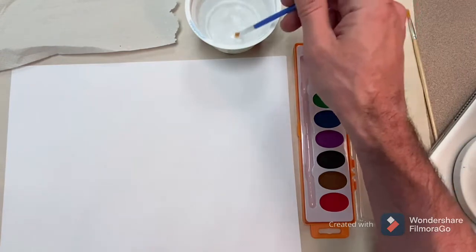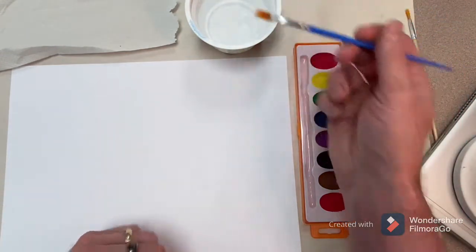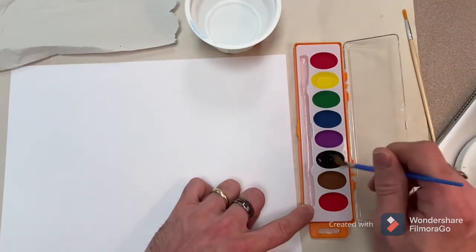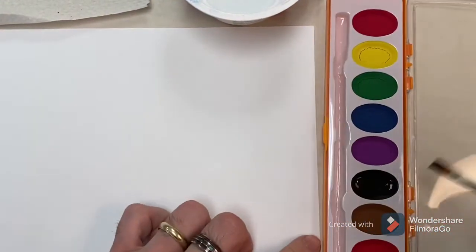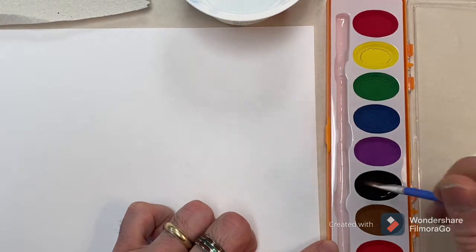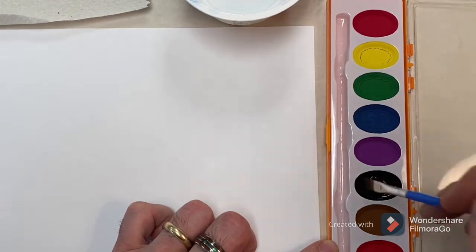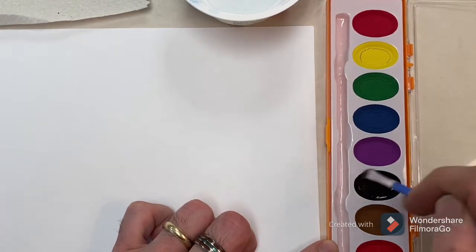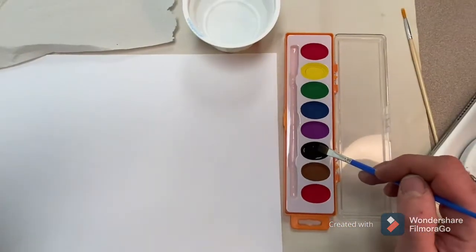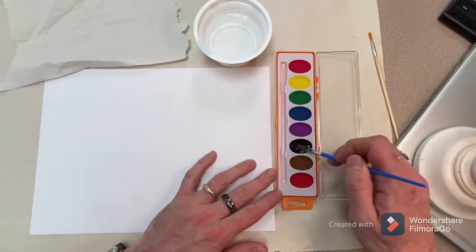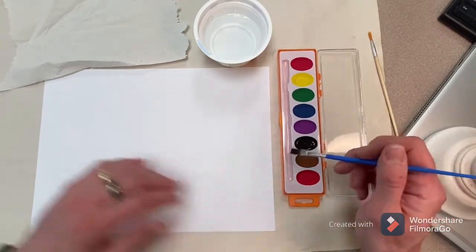Remember with watercolor paints, you got to get water on them to make them work. I'm gonna start with the black. I'm gonna dip my brush in the water and start mixing it into the black paint there. I'm gonna zoom in some. You want to get that paint to suck up that water. You really got to swirl it around a bunch. Alright, so I got the paint on there.